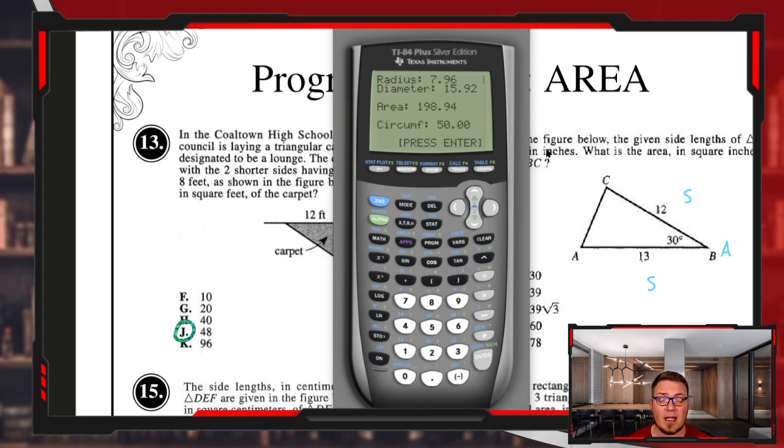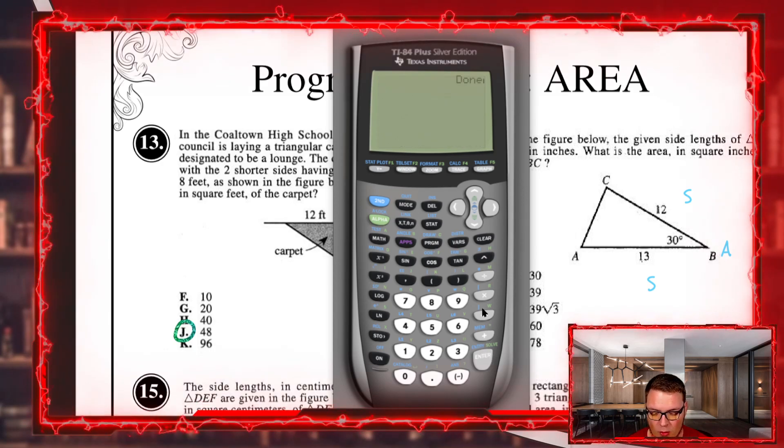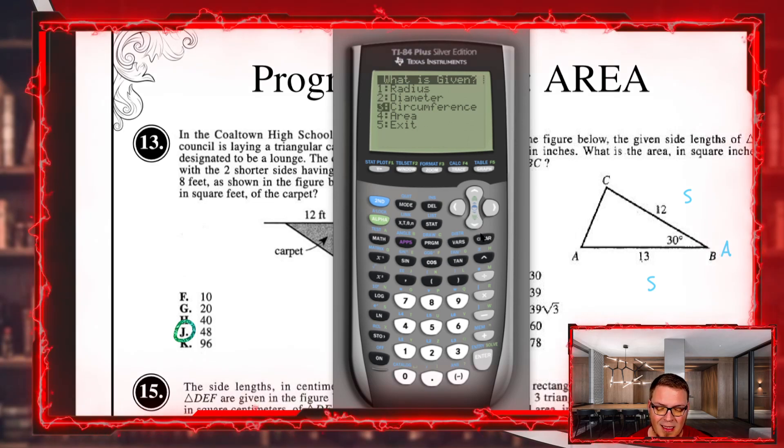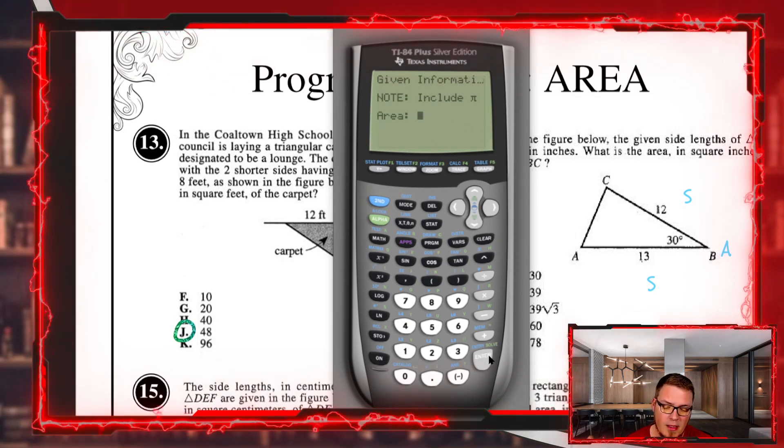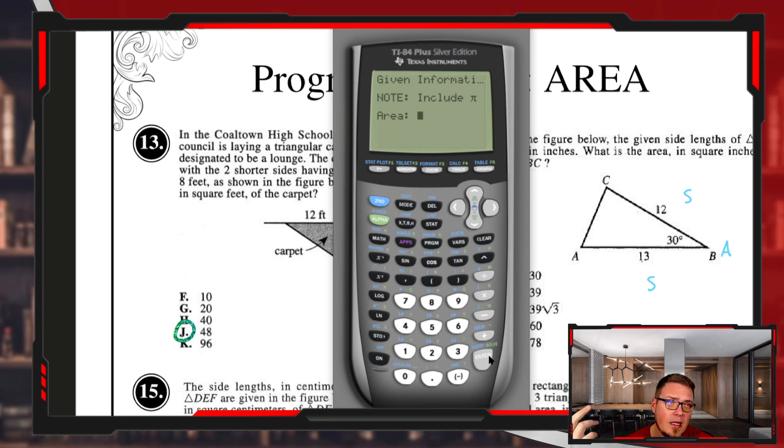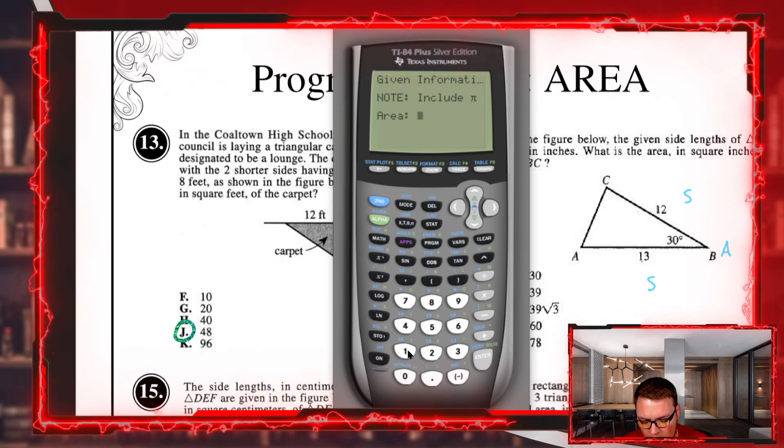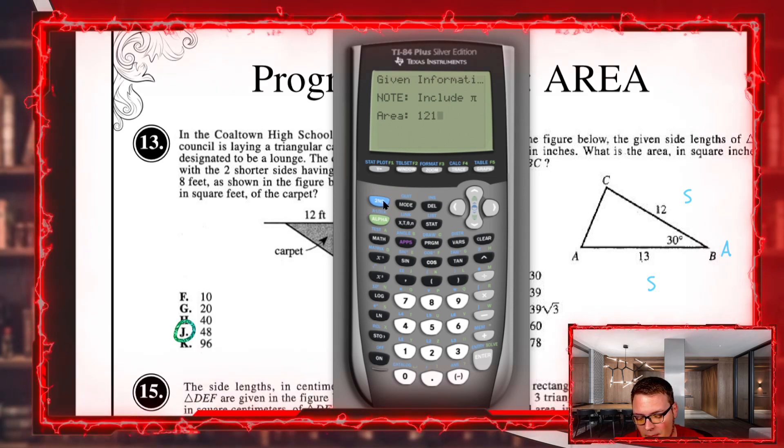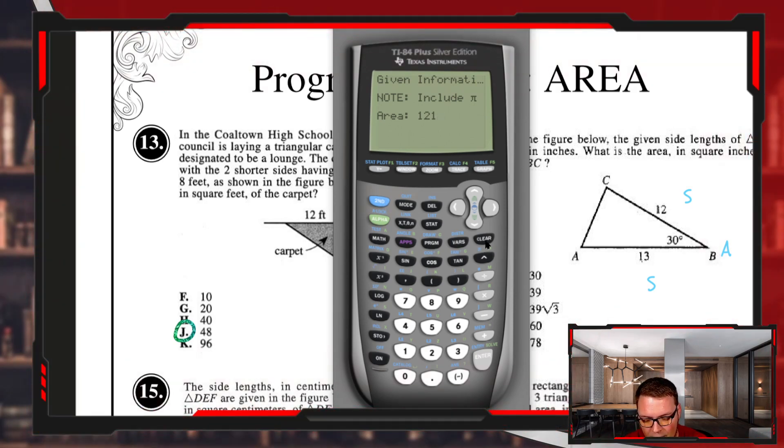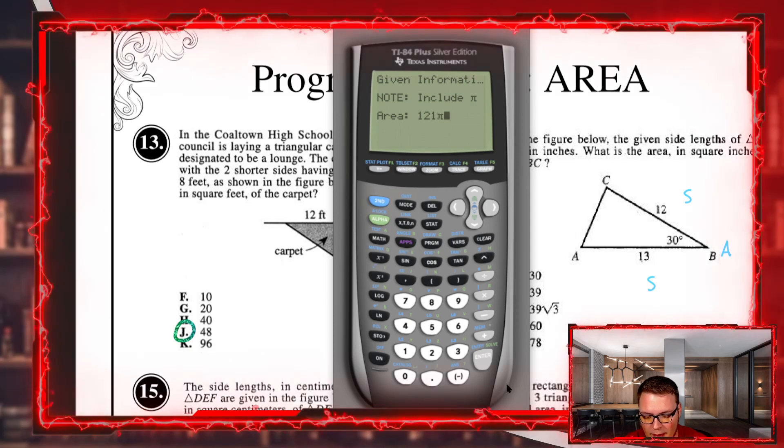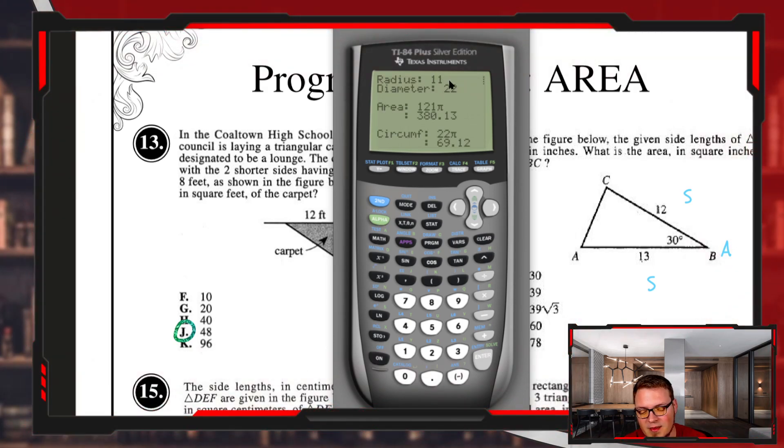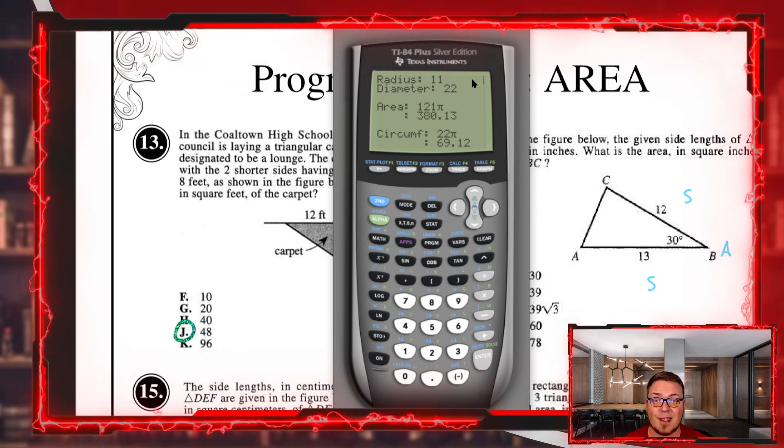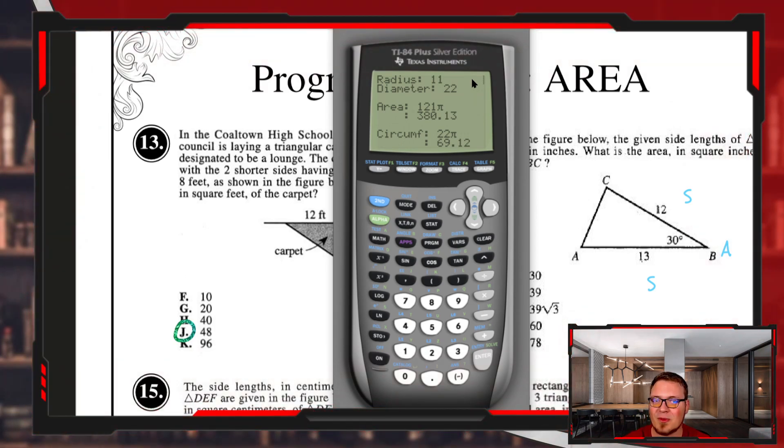There are notes on the area and circumference options. If I say I know the area and maybe they told me the area is 121 pi, you do need to put in pi. Pi is found by hitting the blue second key and then the button below clear, the exponent button. This tells us the radius is 11, diameter is 22, circumference is 22 pi, etc. A really nice one-stop shop for everything related to circles.